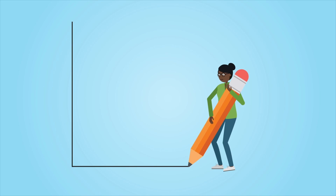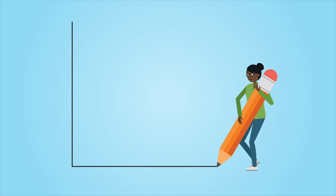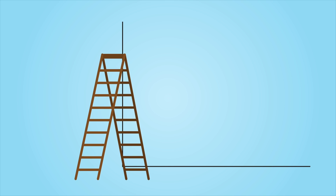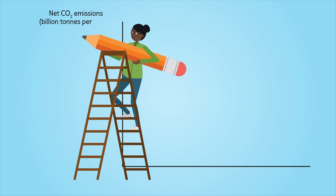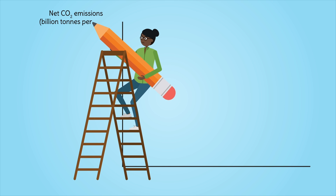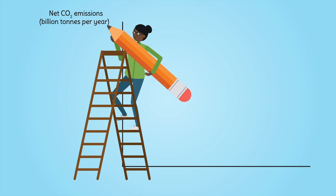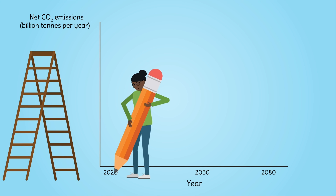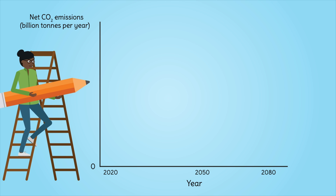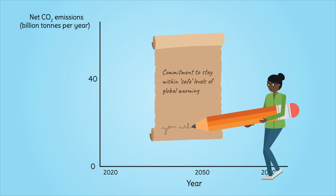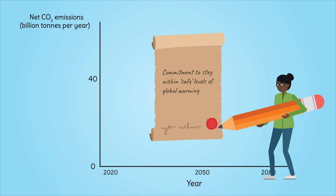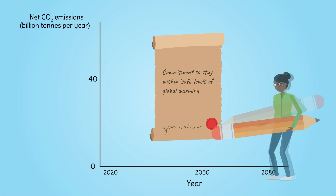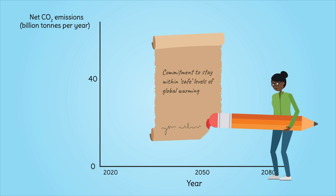We first need to understand our current emissions rate and how we go from there to zero. On this graph we've got global CO2 emissions in billions of tons per year along here, and the year along the bottom. In 2020, global CO2 emissions were 40 billion tons.